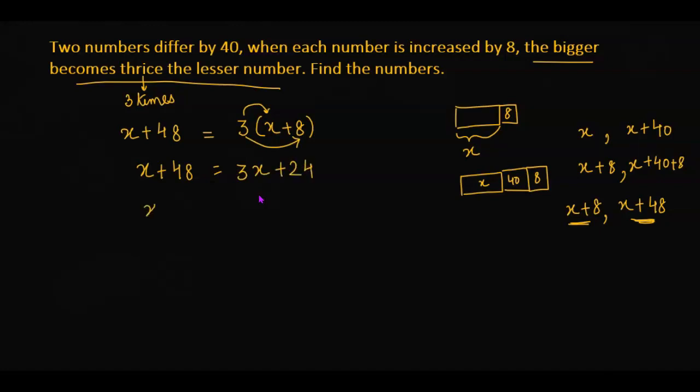Now we can bring the variable to one side and we get negative 2x on this side and negative 24. So now x will be equal to negative 24 divided by negative 2.